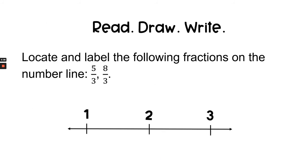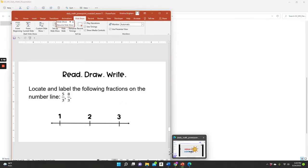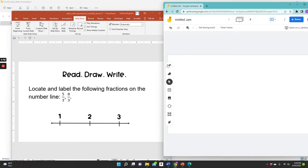Locate and label the following fractions on the number line: five-thirds and eight-thirds. I'm partitioning into thirds, so there should be three equal parts between each whole number.